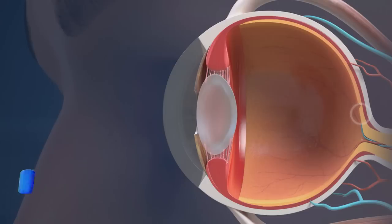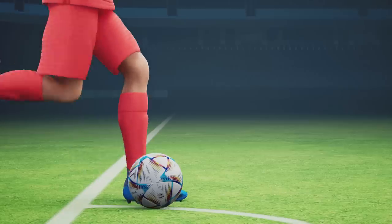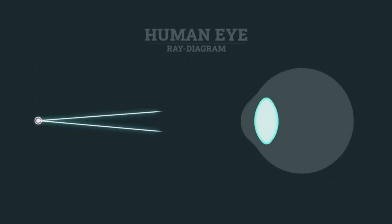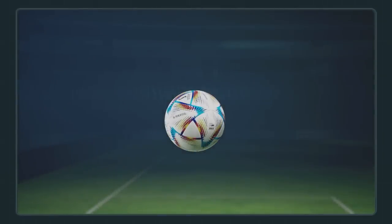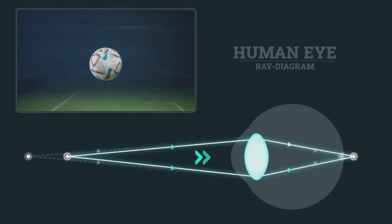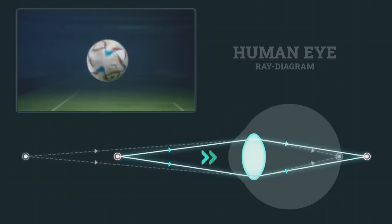To understand the way the eye adjusts to focus on the ball throughout, let's assume the ball to be a point source emitting light. Notice two rays traveling towards the lens — these rays converge at a point on the retina, and we're able to see the ball clearly.